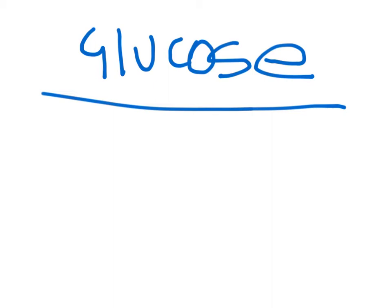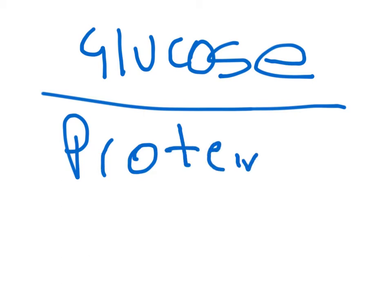Proteins are digested into amino acids and simple derivative compounds outside of the cell. Once the amino acids enter the cell, they are typically used for rebuilding other proteins, but amino acids can be deaminated and converted to glucose for entering glycolysis.